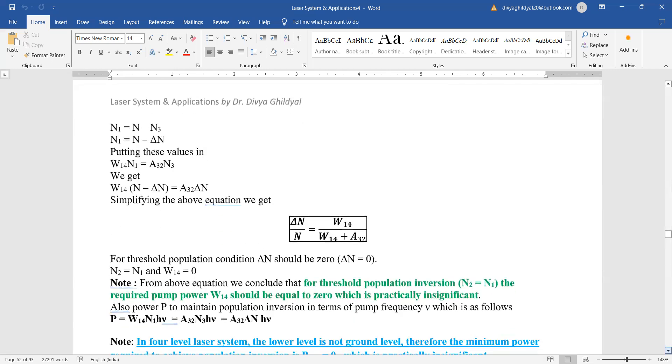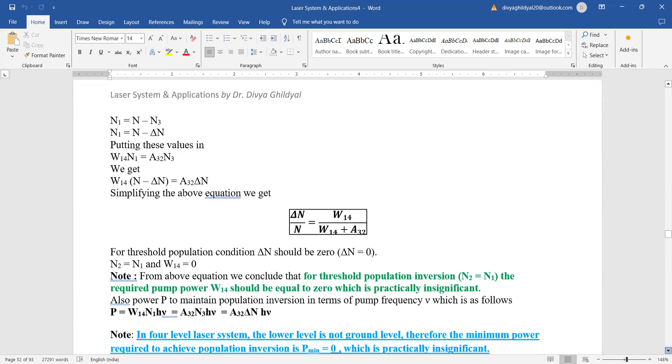So for threshold condition, delta N should be equal to zero. We conclude that for threshold population inversion, the required pump power should be equal to zero, which is practically insignificant.